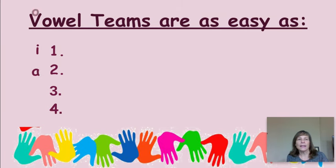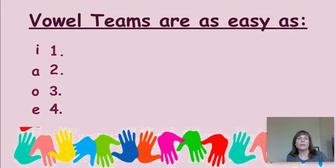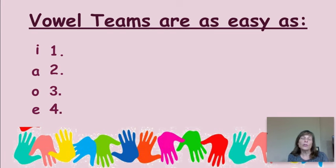I, A, O, and E. So vowel teams are two vowels that work together and they represent or capture the long vowel sound. The I vowel team says I, the A vowel teams capture the sound A, the O vowel teams capture the sound O, and the E vowel teams capture the sound E. You'll notice that U does not team. So if I hear a long U sound, it's not going to be a vowel team — it's going to be a final magic E word.